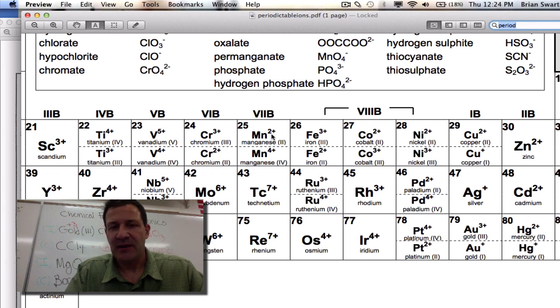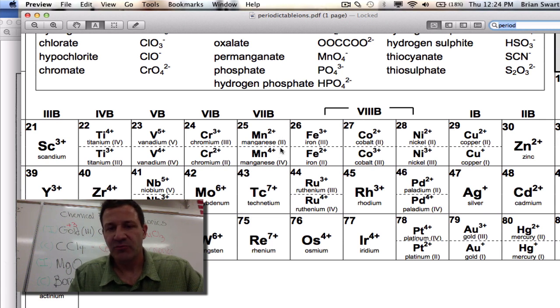For example, manganese can be plus 2 or plus 4. And we can see we have the Roman numerals that tell us which one it is. Nickel can be 2 and 3. Copper can be 2 and plus 1. There are some exceptions to that rule, which is zinc is plus 2, silver is plus 1. And you can see we go like this, you can start at aluminum, plus 3, plus 2, plus 1.